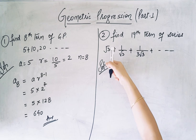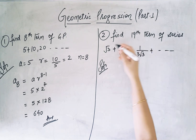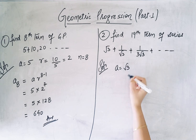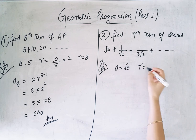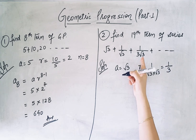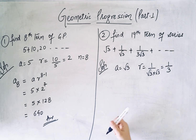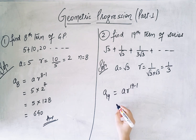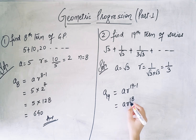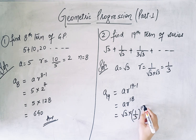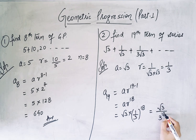Next question: Find the 19th term of the series. We check if it is GP or AP. Here a = √3, and the common ratio r = (1/√3)/√3 = 1/3. The third term by second term also gives 1/3. To find the 19th term: a₁₉ = a × r^18 = √3 × (1/3)^18 = √3 / 3^18.